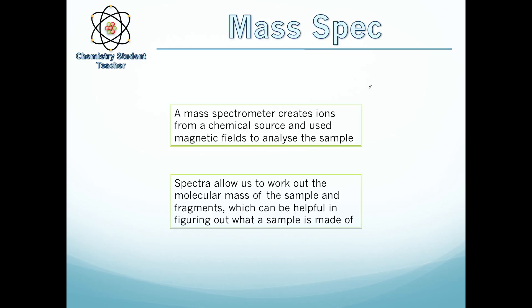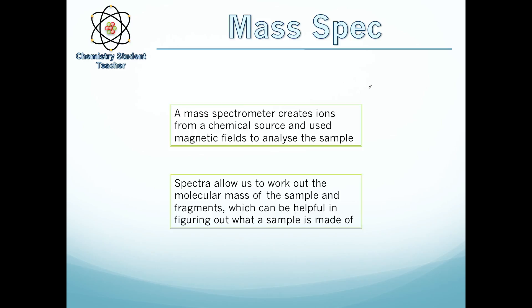And how it does this is a mass spectrometer creates ions from a chemical source and uses magnetic fields to analyze the sample. So if you're doing an exam, you may need to know or find it handy to know how a mass spectrometer actually works. So first of all, you take your sample, you put it in a machine, and basically it will fire electrons and things at it and turn it into an ion. It also breaks the molecule up.